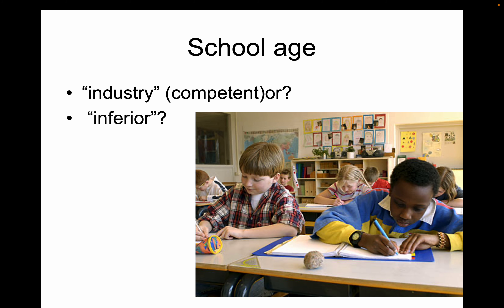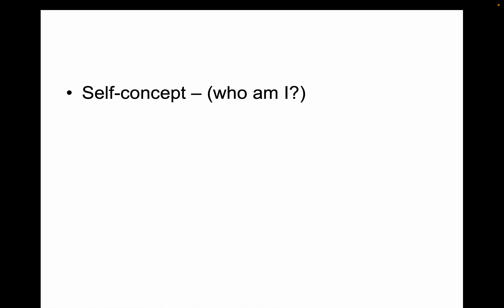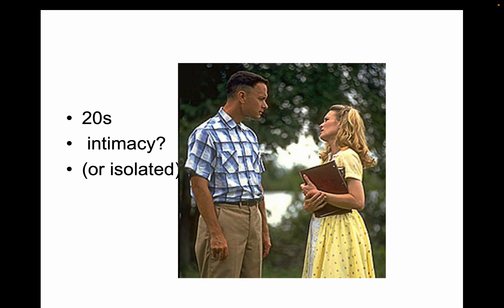Stage three jumps to elementary school — Erikson calls it industry versus inferiority. A third-grader needs to feel competent — a good student, a good runner — and if not, he'll feel inferior. Then in high school, teenagers need identity, which they get from their friends. If they don't find their identity, they'll be confused — he called that role confusion. In your 20s, it's intimacy versus isolation: people want relationships, or they feel isolated.